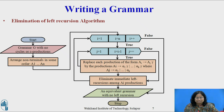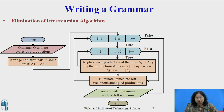Eliminating left recursion — Algorithm. Input: Grammar G with no cycles or ε-productions. Output: An equivalent grammar with no left recursion. Method: Apply the following algorithm to the grammar G. Note that the resulting grammar may have ε-productions.